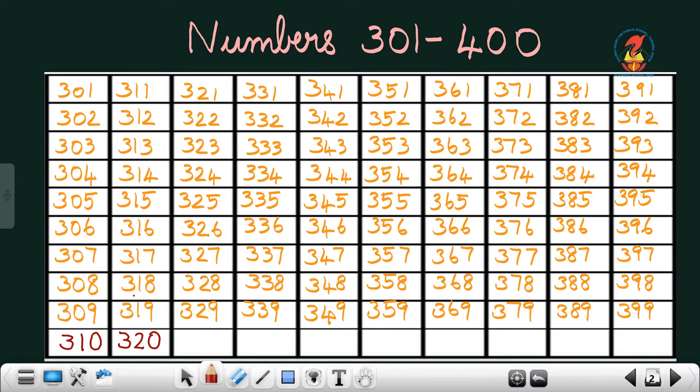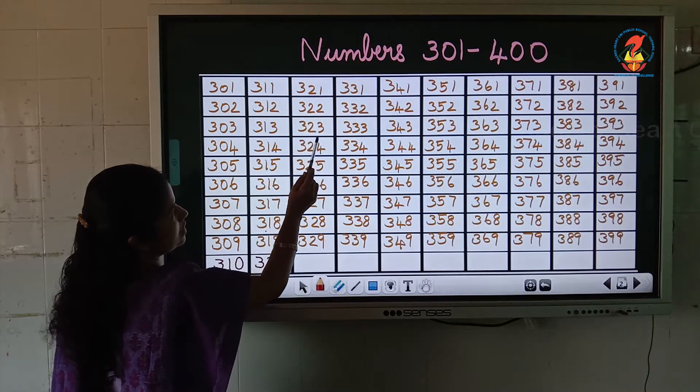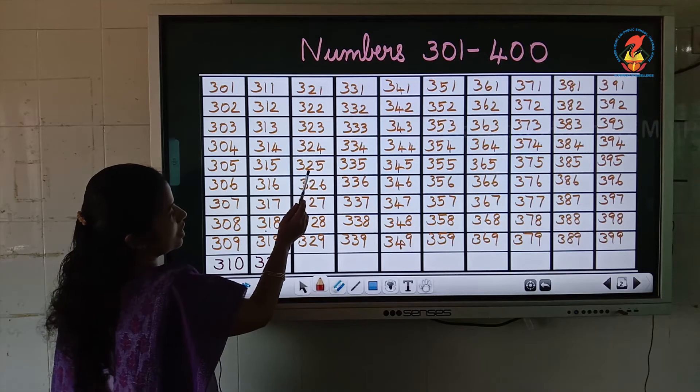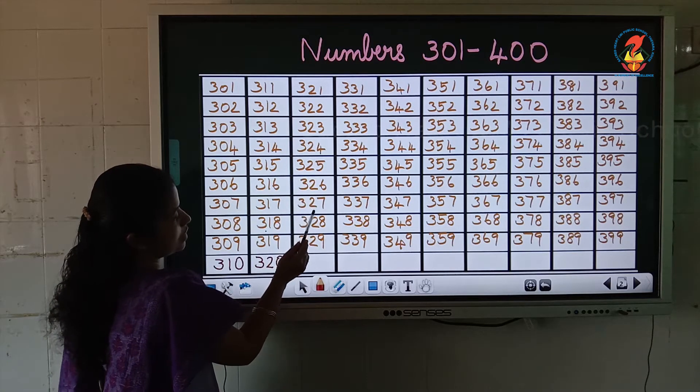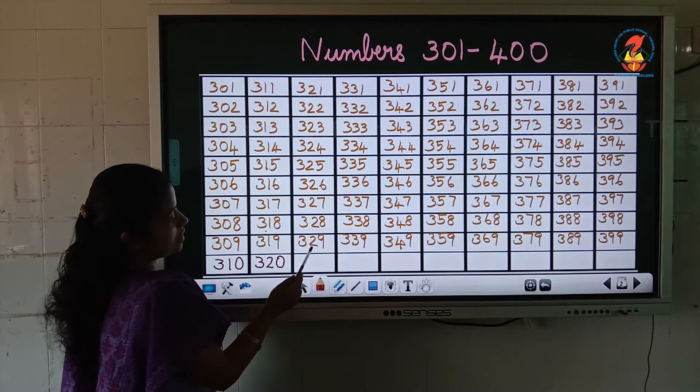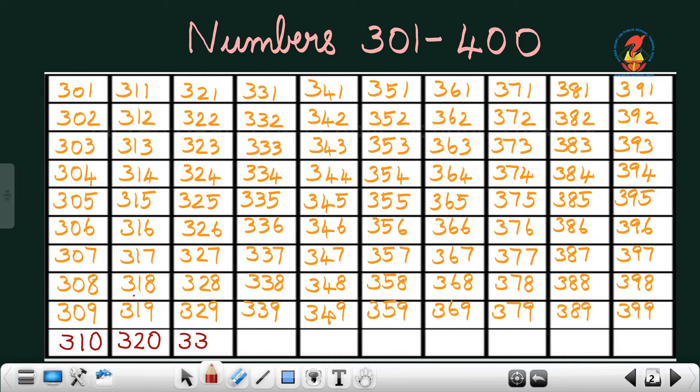After 320, 321, 322, 323, 324, 325, 326, 327, 328, 329, then 330.